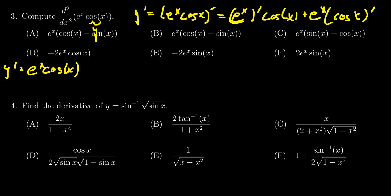And then we get the derivative of cosine, which is a negative sine. So we then get e to the x cosine of x minus e to the x sine of x.